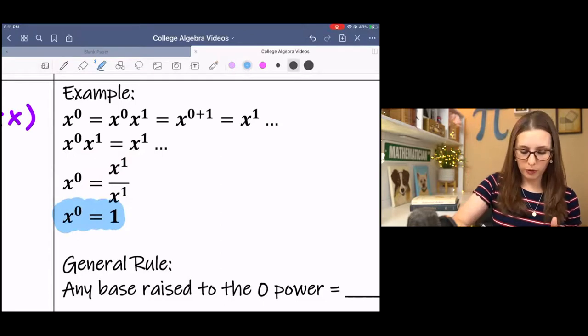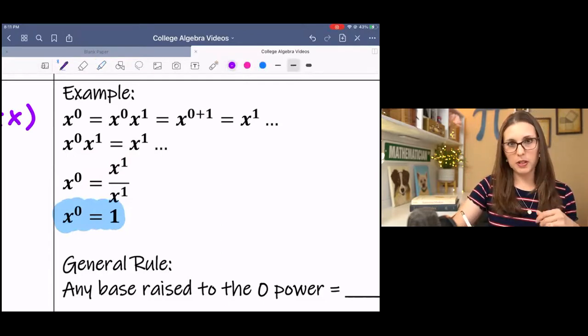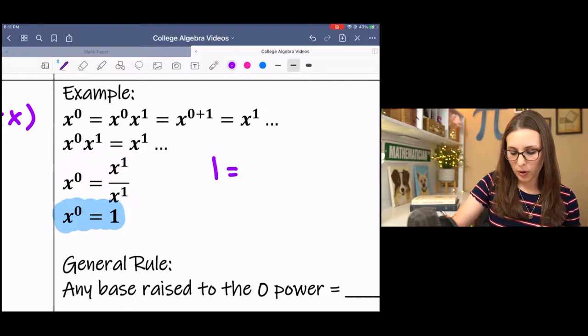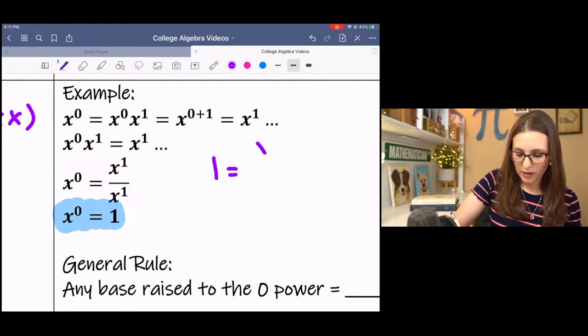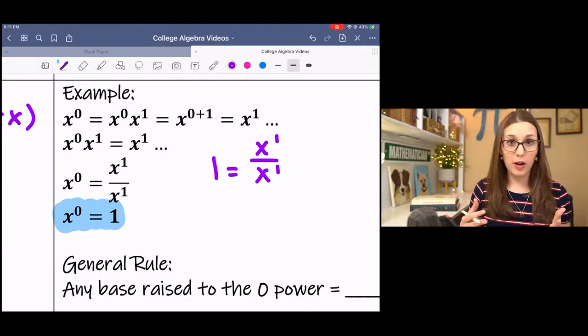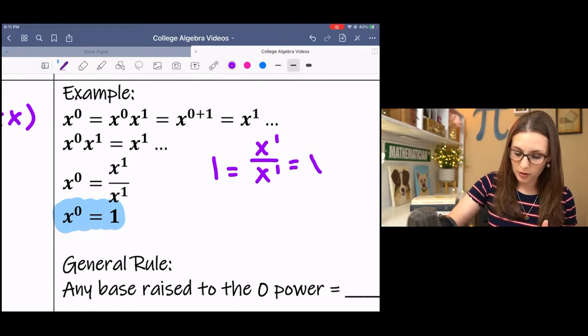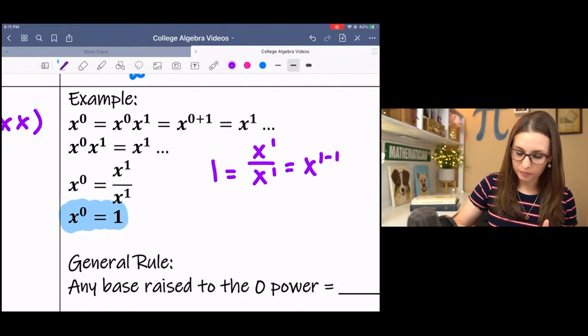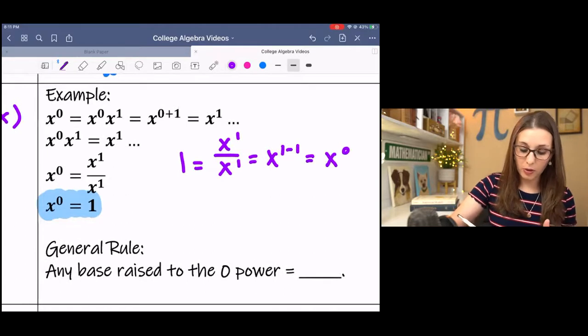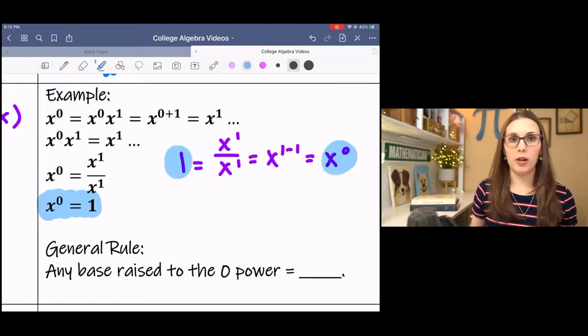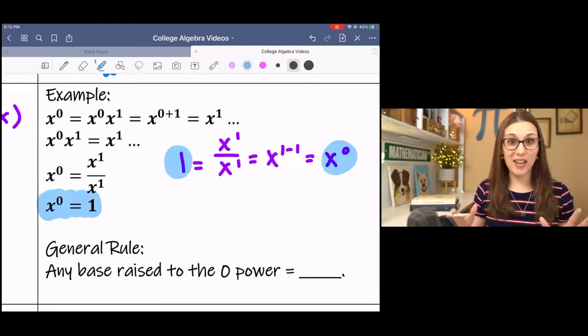I want to show you a simpler proof. If I had just started with 1, and I rewrote that with x's, x to the 1st over x to the 1st, we know that simplifies to 1. Then I use my properties of exponents, 1 minus 1, and that yields x to the 0. Therefore, x to the 0 equals 1. That's all it is.